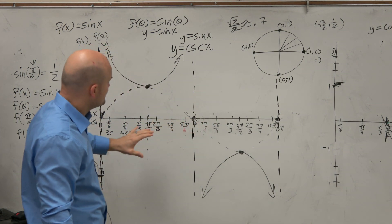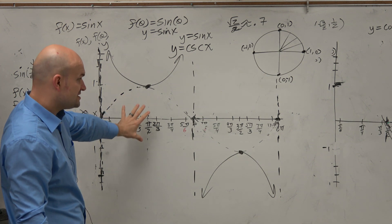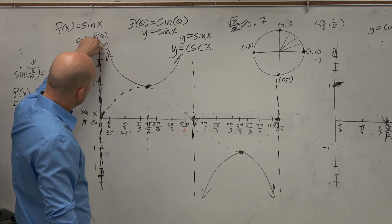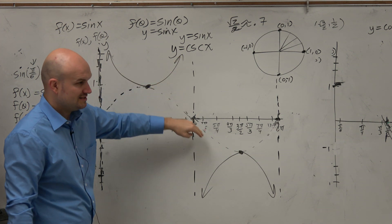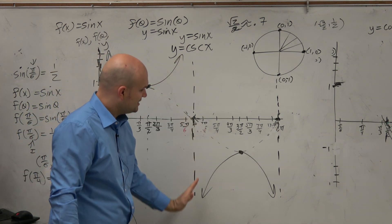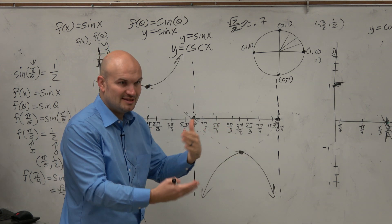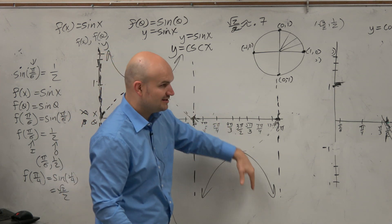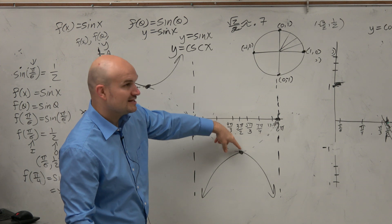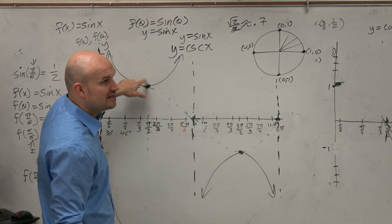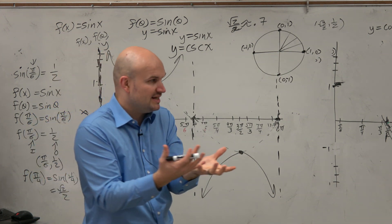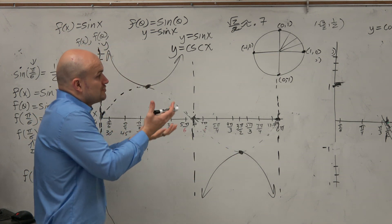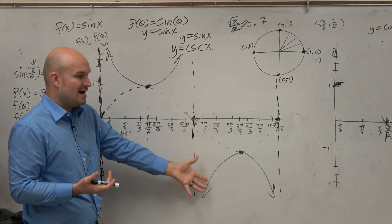It's also very important to understand the characteristics now of this graph. You can see this graph is decreasing when sine would have been increasing. It's increasing when sine is decreasing. The maximum is like the minimum of the sine, the minimum is now the maximum. So you can see that relationship between the cosecant and secant plays out, not just in our triangles, but in the graph.